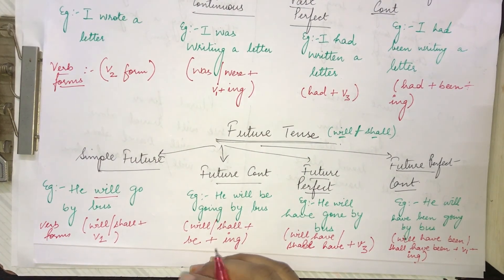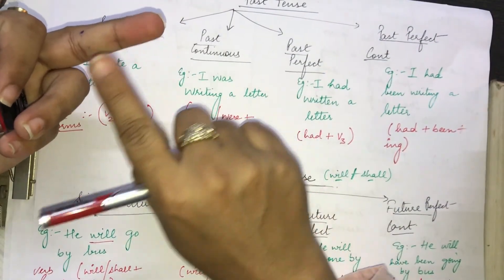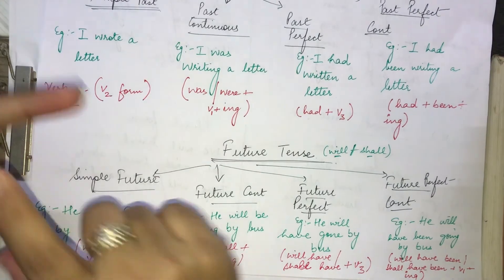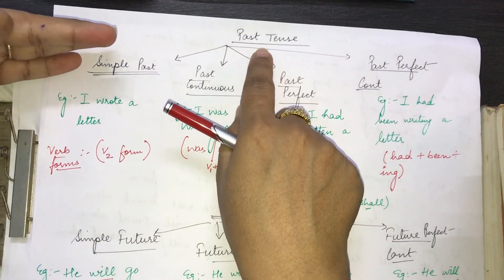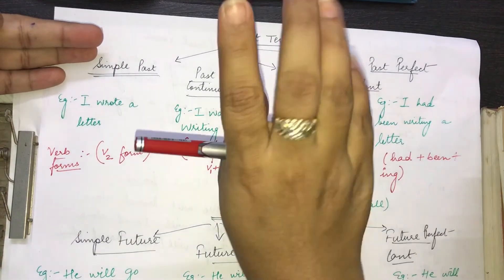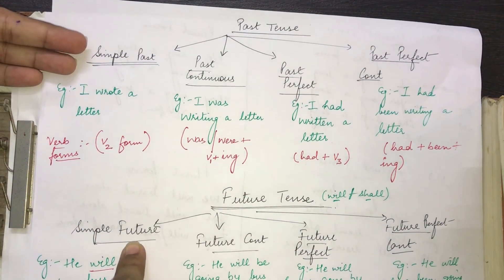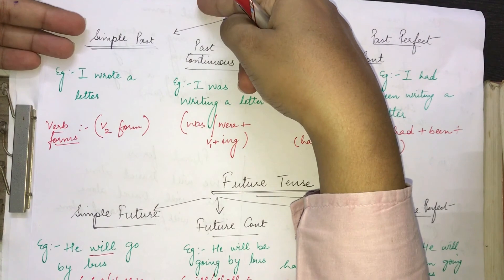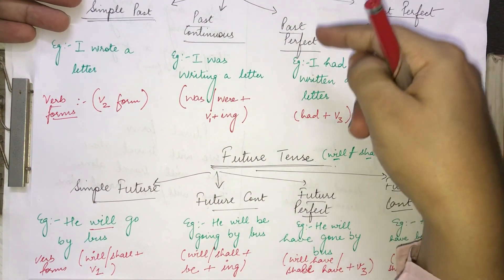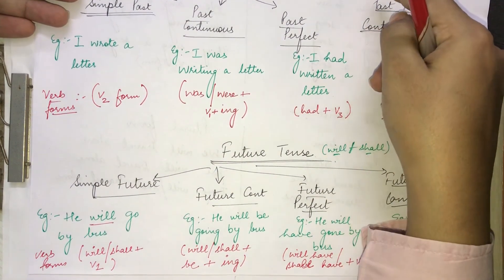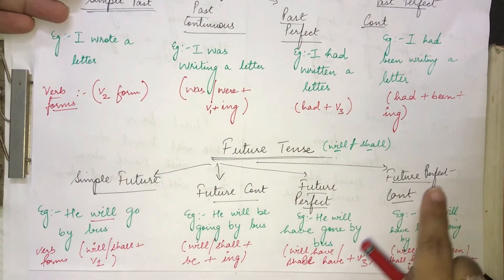That's all for the lesson today. We have learned three tenses: present, past, and future. Each tense has four sub-categories. The structure is parallel: simple present, simple past, simple future; present continuous, past continuous, future continuous; present perfect, past perfect, future perfect; and present perfect continuous, past perfect continuous, future perfect continuous.